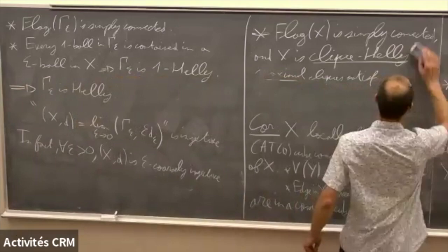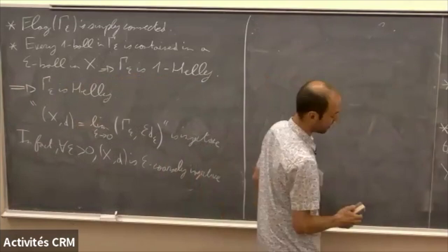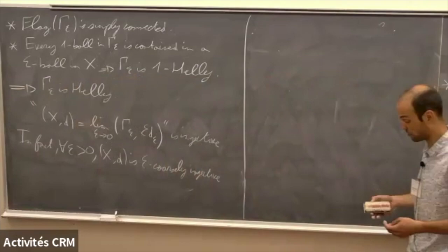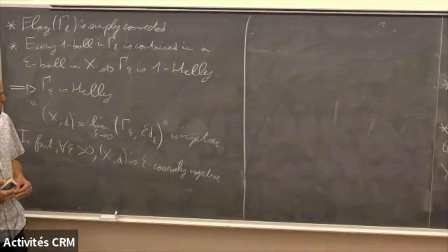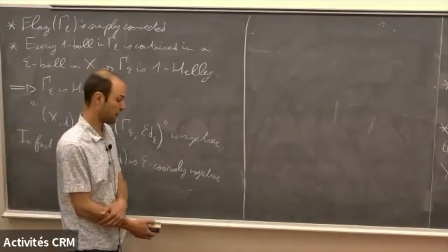Any question about these? So these are very powerful tools to build injective metric spaces and graphs just by looking at local conditions. I will use them in the lecture tomorrow to produce a large variety of injective metric spaces and heli graphs. And I will now present a way to classify isometries of nice injective metric spaces and graphs.